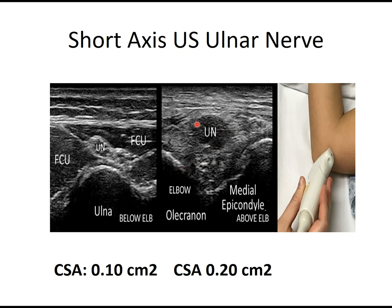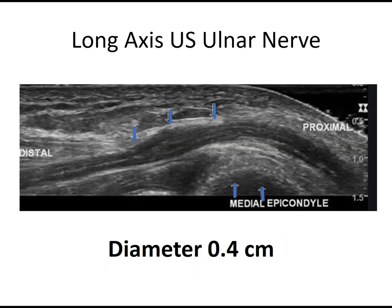And it's a lot larger — it's twice as big at 0.2 square centimeters. This is a long axis view which shows a significant change in morphology at the area of focal swelling, consistent with ulnar neuropathy, and that diameter of 0.4 centimeters is enlarged.